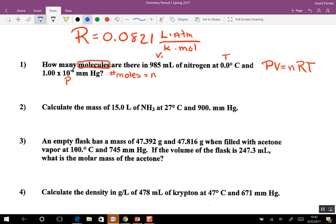Volume is 985 milliliters. Can we convert that to liters easily? Divide by a thousand, 0.985 liters. Our temperature is zero, so that's 273, correct? And our pressure is 1.0 times 10 to the negative sixth millimeters of mercury. Can I convert that to atmospheres? So I want to get to atmospheres. How many millimeters of mercury in an atmosphere? 760.